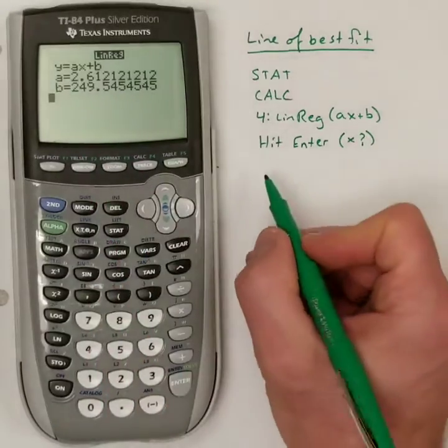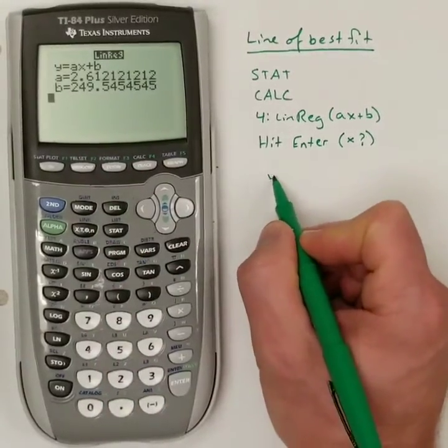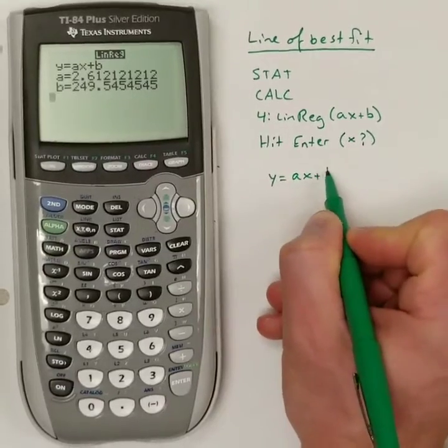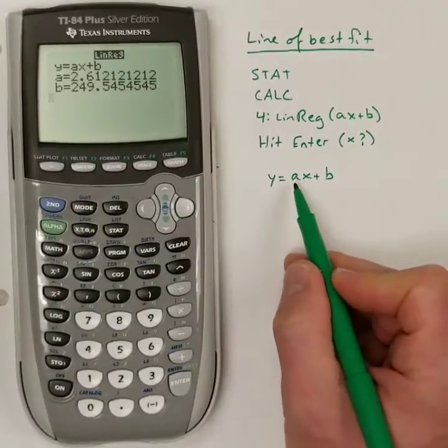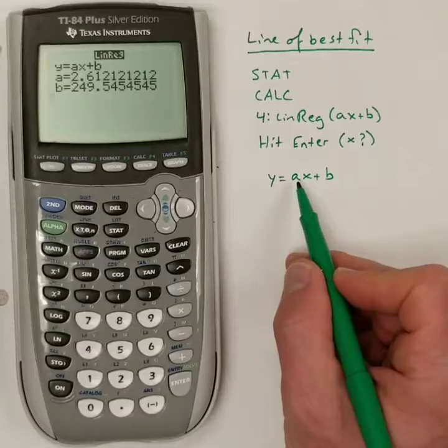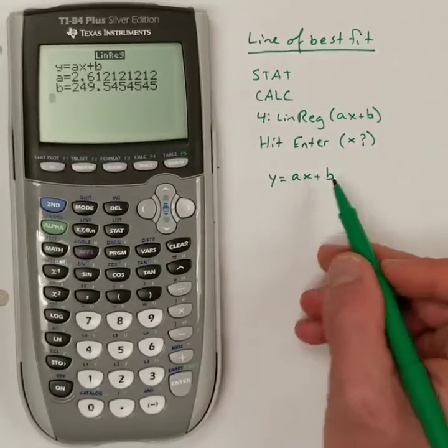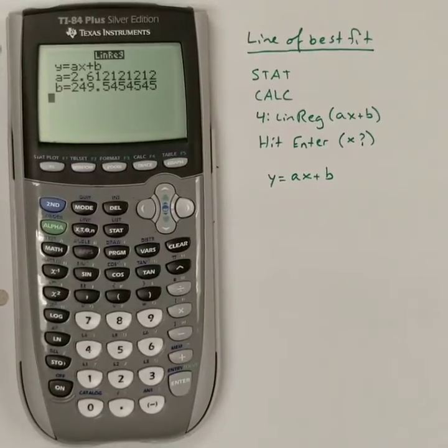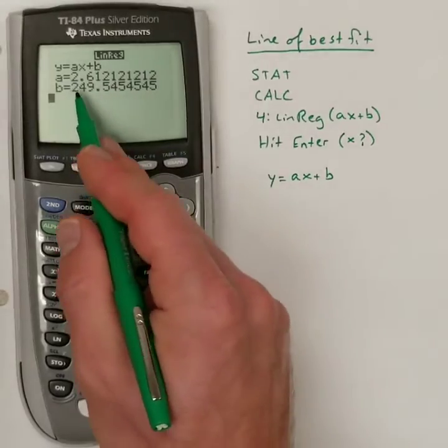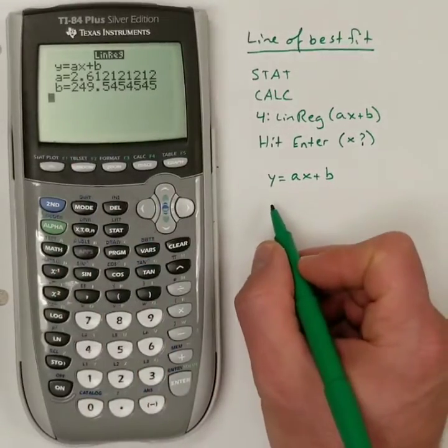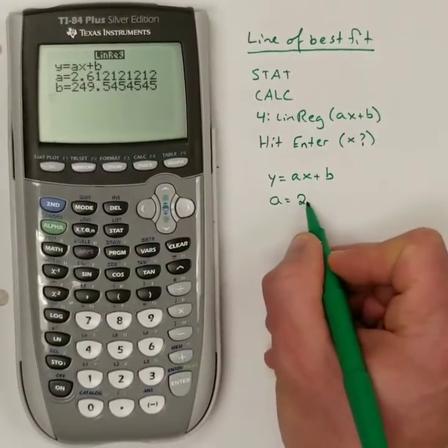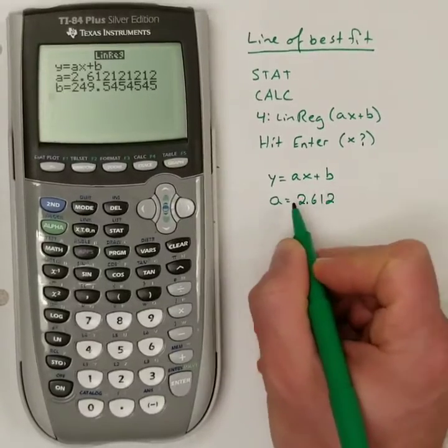Now, I get this screen where it says y equals ax plus b. It looks like the slope intercept form mx plus b, except they use an a for the slope. That's all it is. They give you a value of a for the slope.